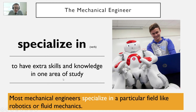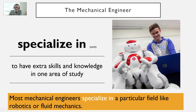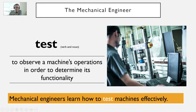Specialize in. Remember to include the word 'in' — it means to have extra skills and knowledge in one area of study. For example, most mechanical engineers specialize in a particular field like robotics or fluid mechanics. Here we can see a young mechanical engineer who specializes in robotics — that's the one area he has a lot more knowledge in.